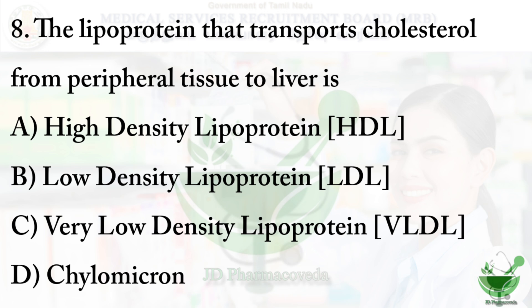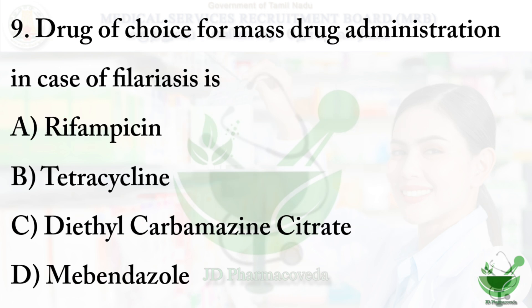Question number eight: the lipoprotein that transports cholesterol from peripheral tissue to the liver is — option A: high density lipoprotein (HDL), option B: low density lipoprotein, option C: very low density lipoprotein, option D: chylomicron. The correct option is option A, high density lipoprotein (HDL).